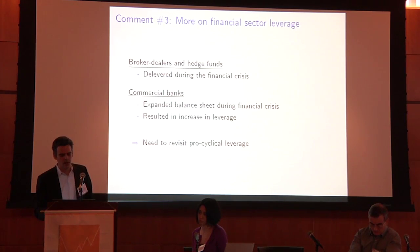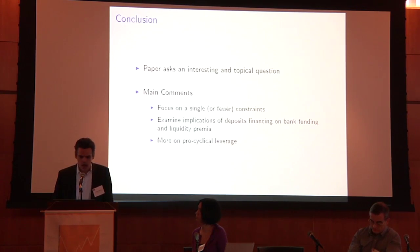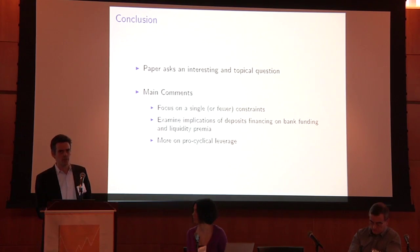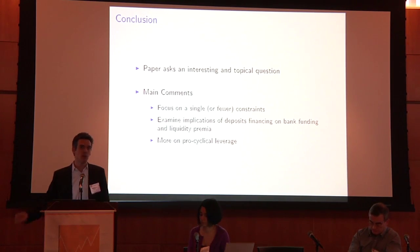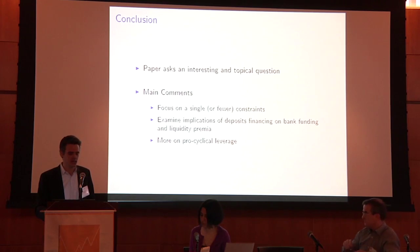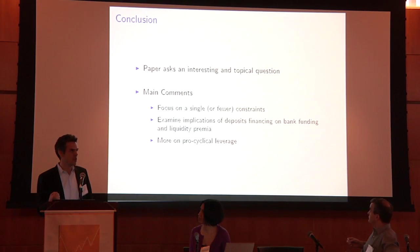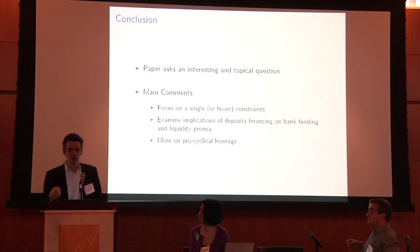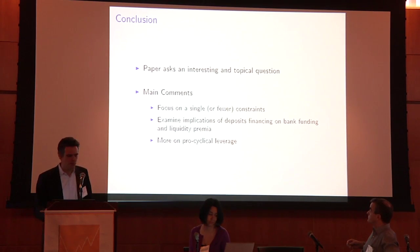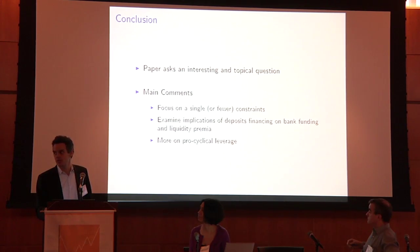Tying these estimates from the model to what we observed during the crisis would be useful. In conclusion: this paper asks an interesting and topical question. It's very important to bring money back and bring banks into these models to understand whether they can help explain real outcomes and do better policy. My main comments are: be clearer about the main friction being put in; show more about implications of deposit funding, particularly the liquidity premium and bank lending; and tell us more about the implications for pro-cyclical leverage.